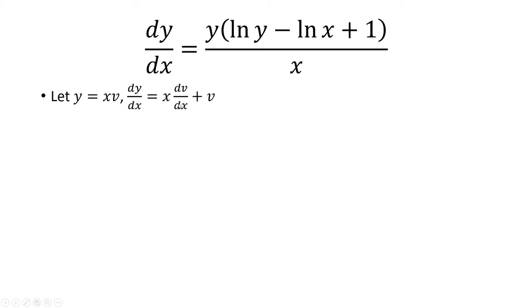Now I'm going to take dy over dx and replace it over here. So dy over dx becomes x dv over dx plus v. And on the right, I'm going to replace y with xv.